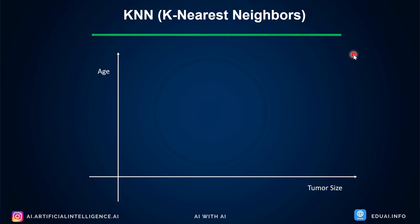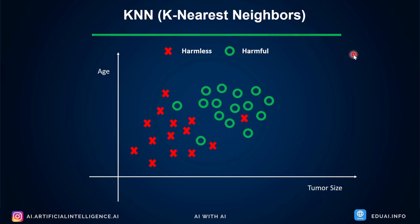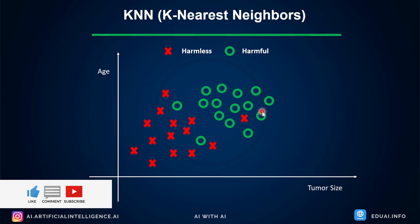To understand how KNN really works, we have a simple example. We have a dataset of harmless and harmful tumors plotted for age and tumor size. The red crosses are harmless tumors — as age is less, more harmless tumors appear. As age grows, the tumor size increases and you see harmful tumors shown in green circles. You can assume this as a cancer dataset. We need to find out whether an identified tumor is harmless or harmful. Now when a new data point comes — say a new patient visits the clinic — the new data point needs to be classified as harmless or harmful. So how do we classify this?